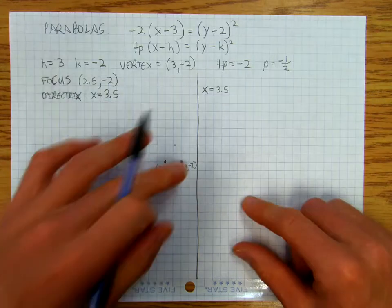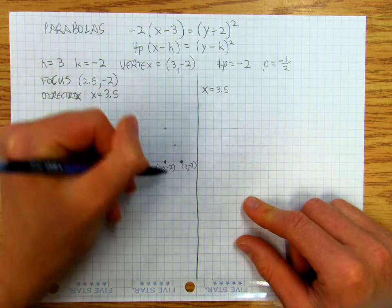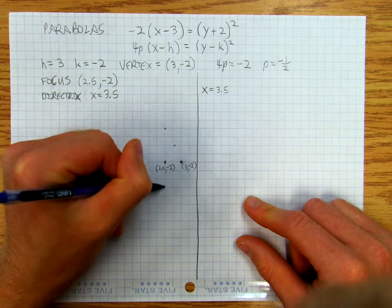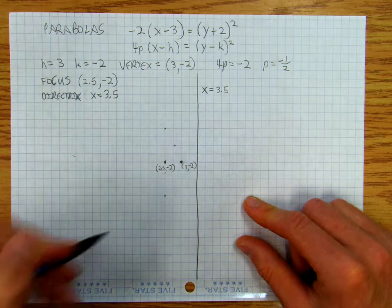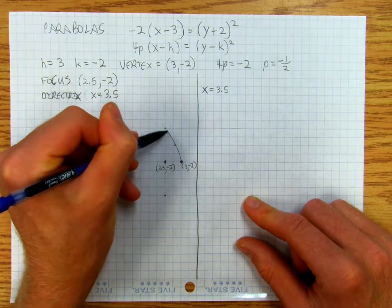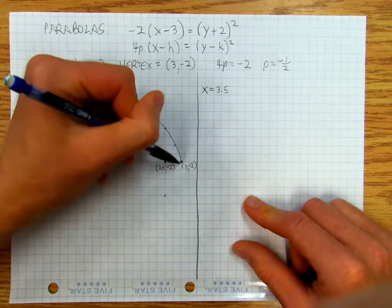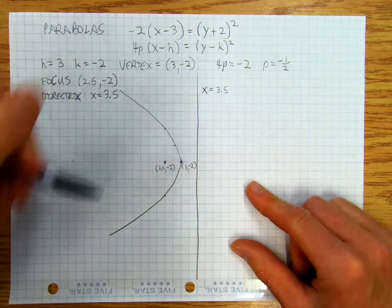And then, once again, I make my little latus rectum. So there's my latus rectum, like here. And so then, this is going to mean that I'm going to open up like that. Something like that.